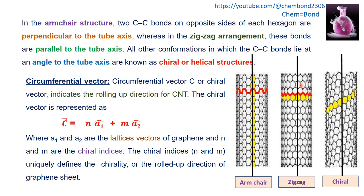All other conformations in which carbon-carbon bonds lie at an angle to the tube axis — greater than zero and less than 90° — are known as the chiral or helical structure.